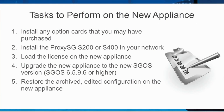Tasks to perform on the new appliance include: installing any option cards that you may have purchased; installing the ProxySG S200 or S400 in your network; loading the license on the new appliance; upgrading the new appliance to SGOS version 6.5.9.6 or higher; and restoring the archived, edited configuration on the new appliance.